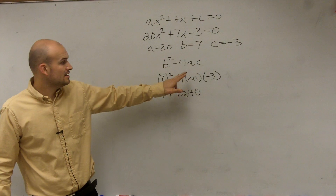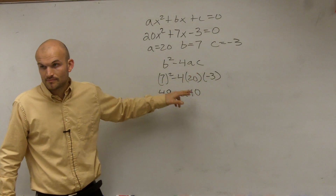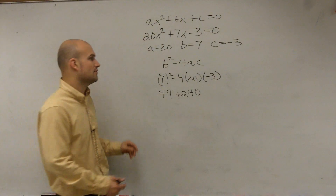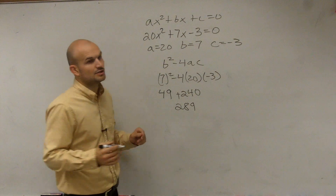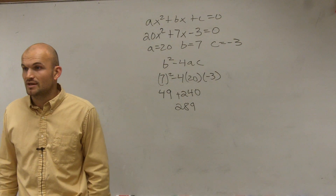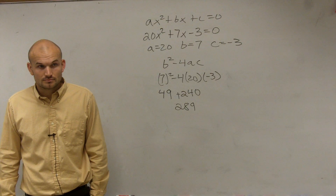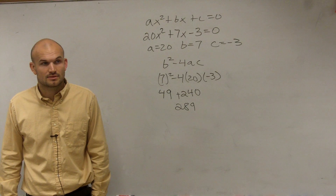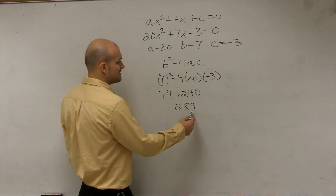Negative 4 times 20 is negative 80. Negative 80 times negative 3 is a positive 240. So I'm really adding 49 plus 240, which gives me 289. Now I need to determine: is that a perfect square? Yes — we can rewrite 289 as 17 squared.